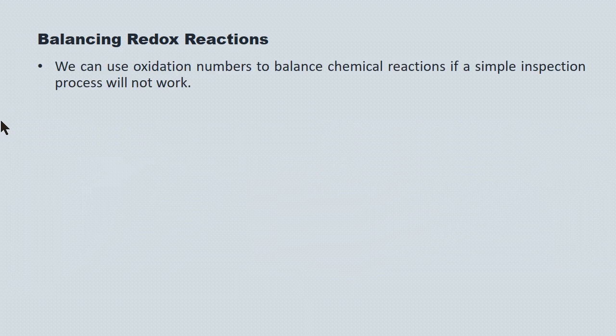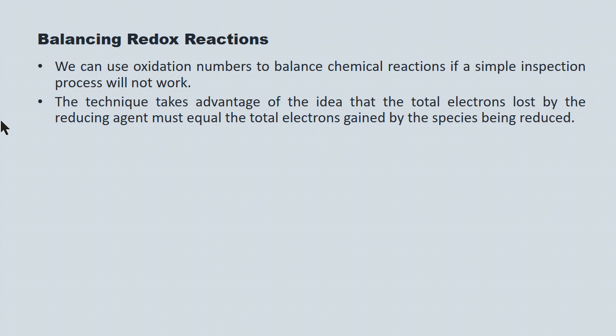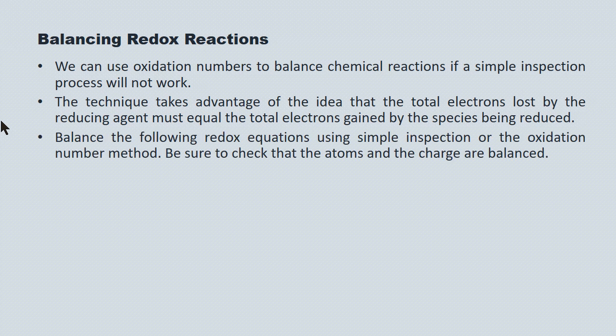We've looked at oxidation numbers and we can use them to balance chemical equations if a simple inspection process won't work for us. The technique takes advantage of the concept that the total number of electrons lost on the oxidizing side of the reaction must equal the total number of electrons gained on the reduction side of the reaction. We have an example where we're going to try inspection but, failing that, we're going to use an oxidation number method.